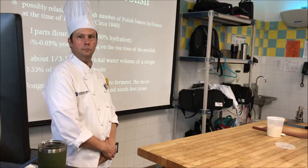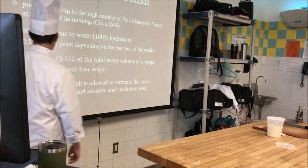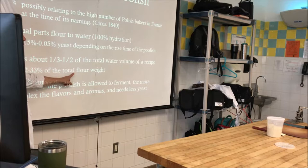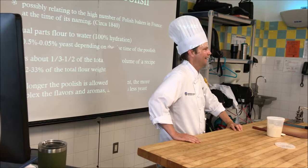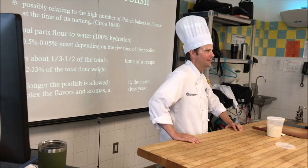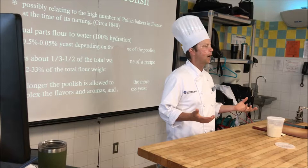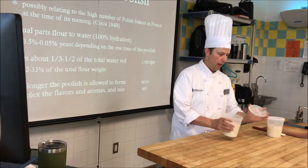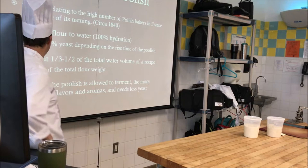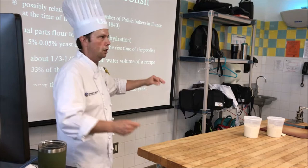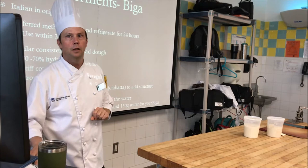Poolish makes up 22 to 33 percent of the total flour weight in your recipe. You would use it in a lean dough, and we'll talk about the specifics shortly. You add 22 to 33 percent of the total flour weight, depending on the result you want.